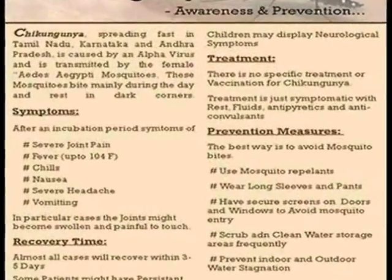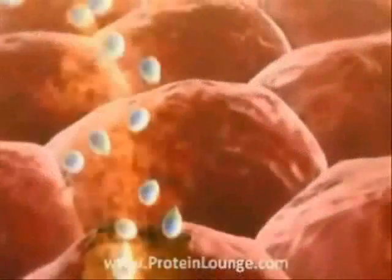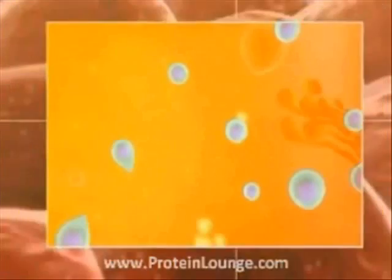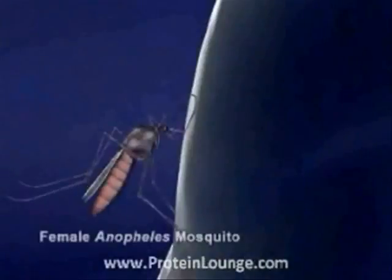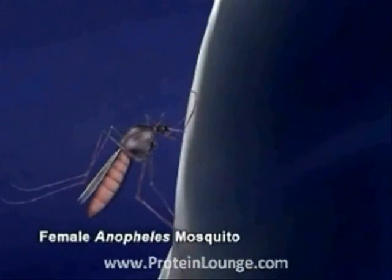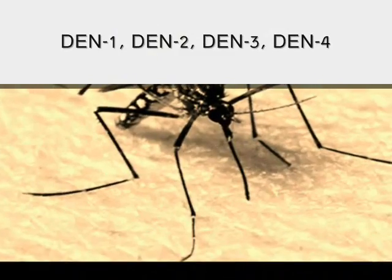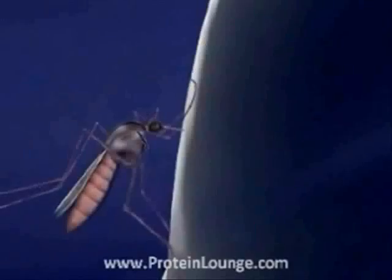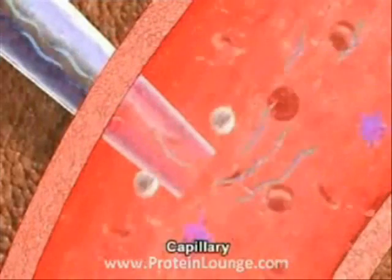Dengue virus is a flavivirus genus from the flaviviridae family. This virus is an RNA virus. It has a spherical shape with an infectious envelope. It infects vertebrates, including humans, through mosquito intermediaries. Dengue and dengue haemorrhagic fever are caused by the virus serotypes DEN-1, DEN-2, DEN-3, and DEN-4. The four different dengue serotypes are maintained in a cycle involving humans and infected female Aedes mosquitoes.